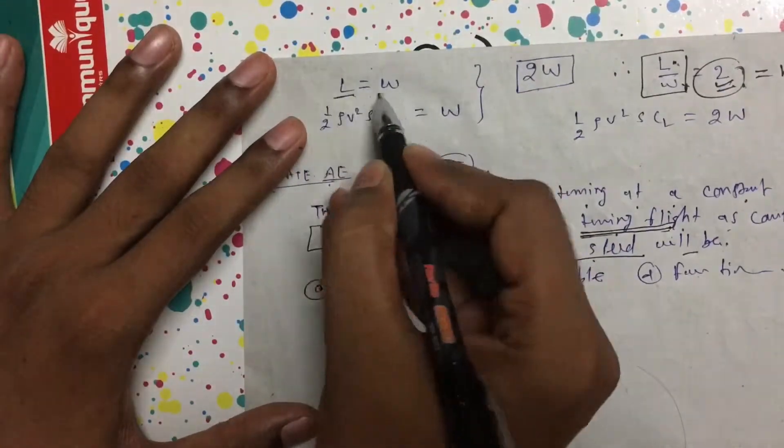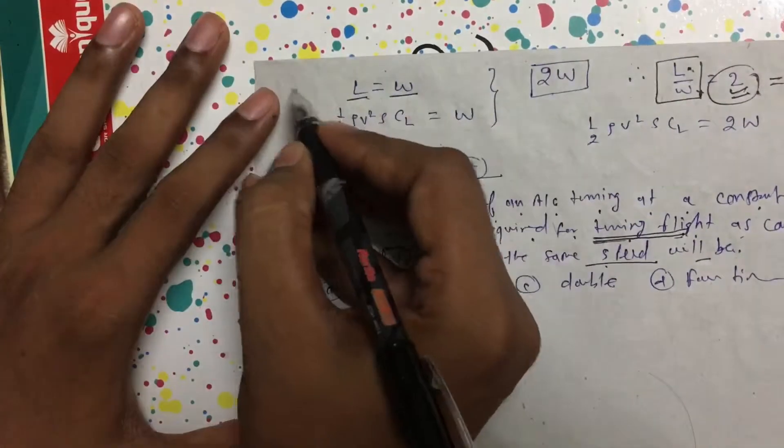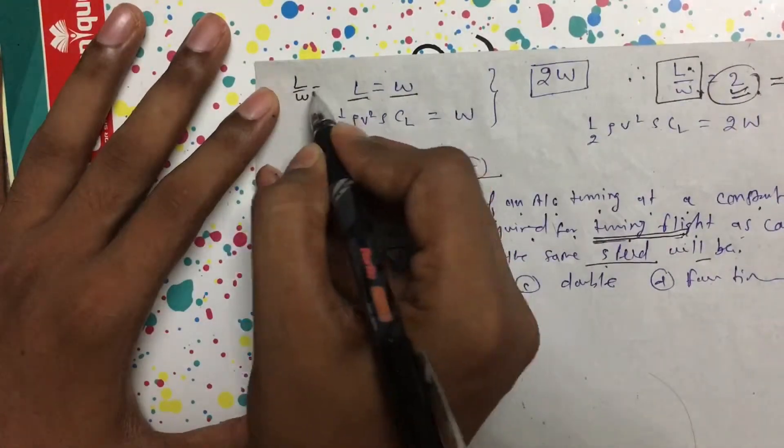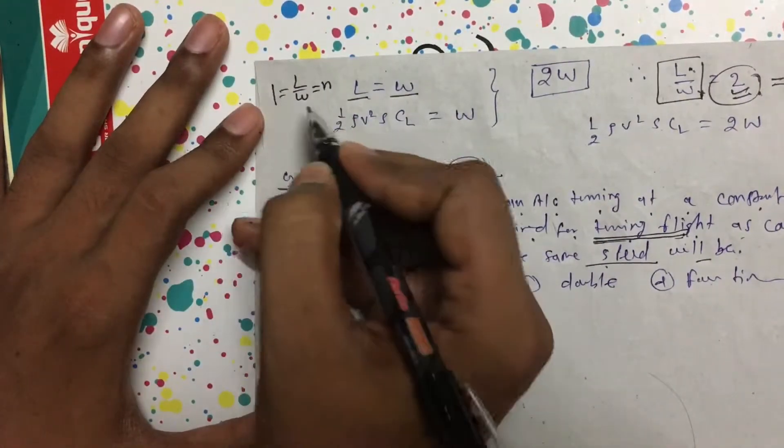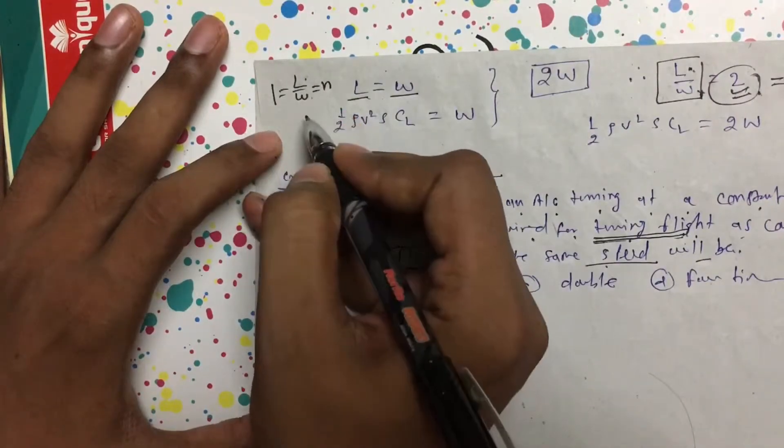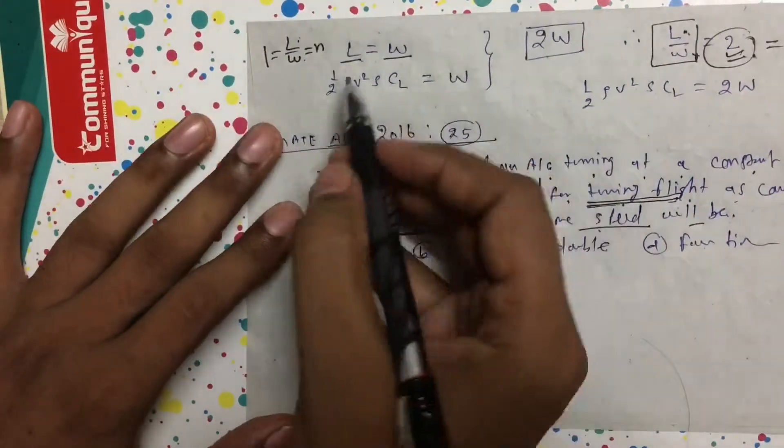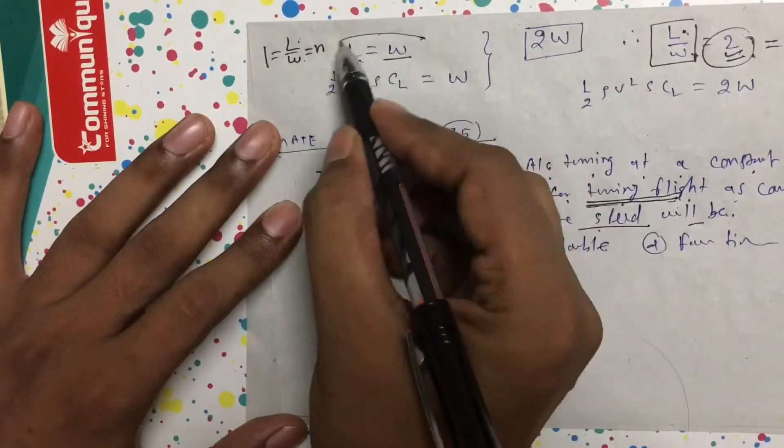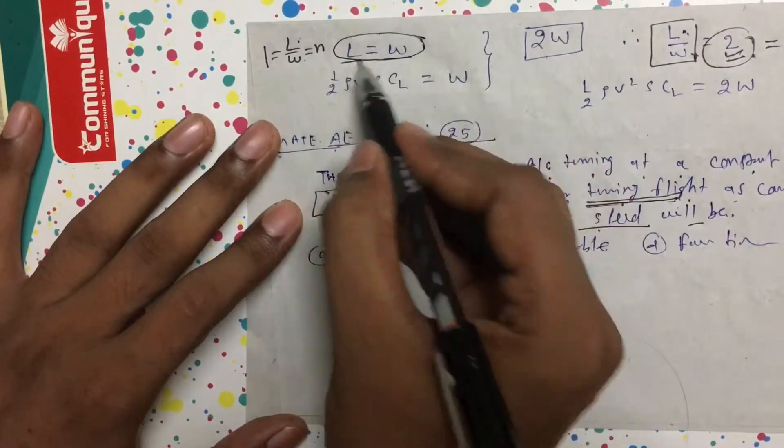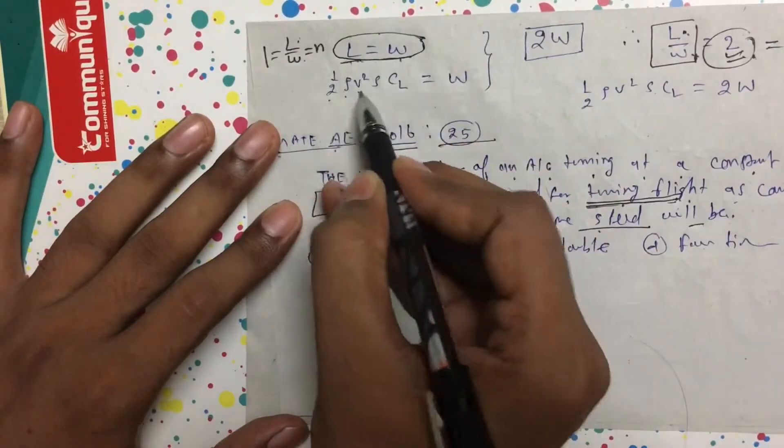This means the load factor L by W equals n, which equals 1. Why 1? Because lift and weight are both equal. When level flight occurs, the lift formula ½ρV²S·CL equals W.